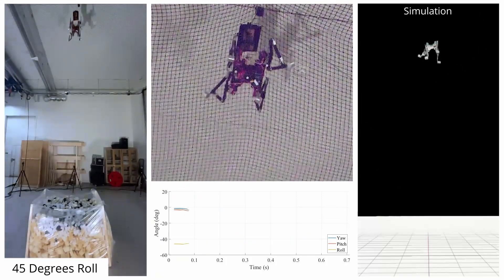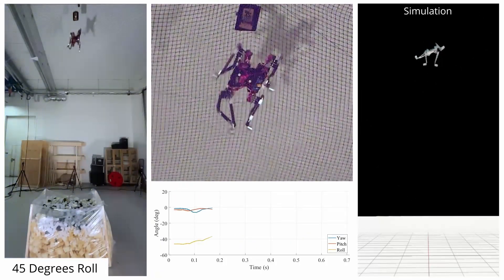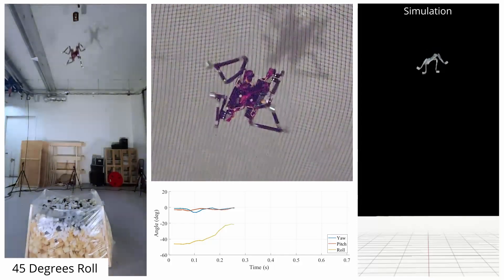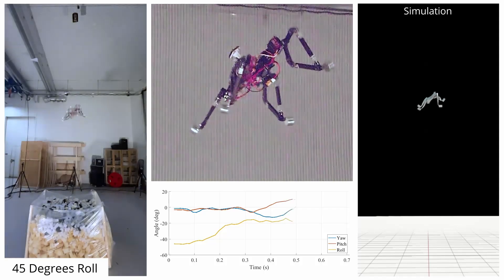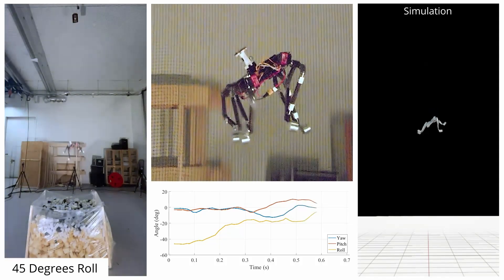The resulting configuration allowed for a free-fall duration of 0.7 seconds. Through analysis of repeated experiments we estimate that the quadruped achieves an average angular velocity of 110 degrees per second.